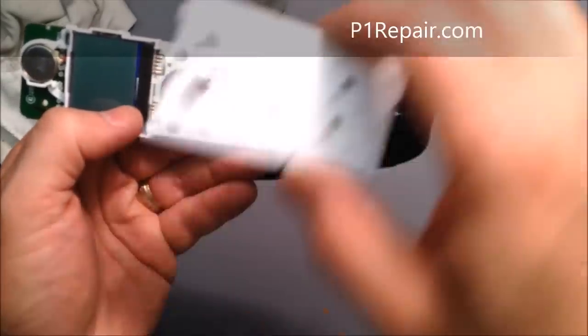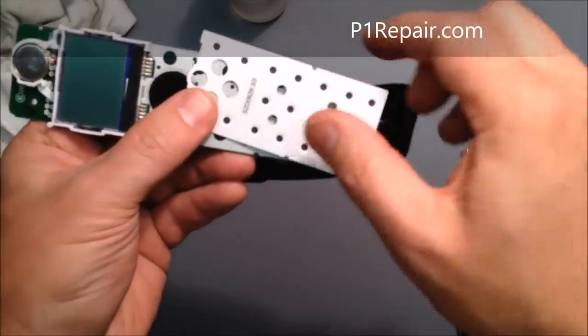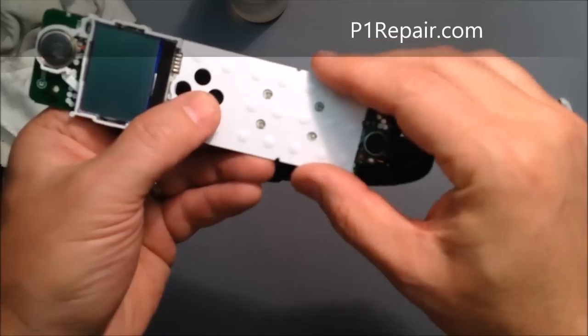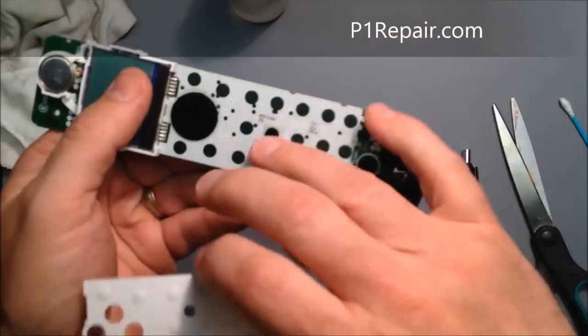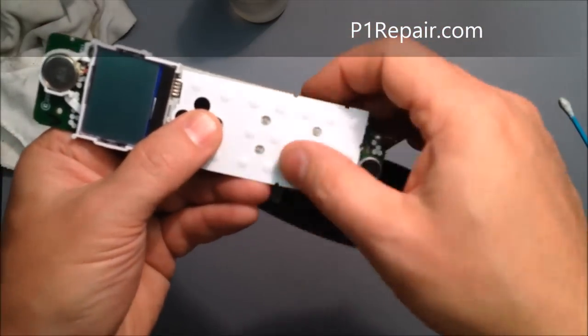And then occasionally one of these might wear out. The paint scrapes off of these. And once you put the phone together, you can't even tell that that's there. It feels exactly the same as the adjacent buttons.